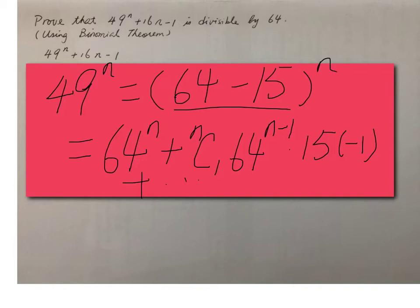Now, here we have the expression arranged in descending powers of 64. Therefore, it means the power of minus 15 is increasing. Then you can imagine that the last term is this one, (-1)^n × 15^n.